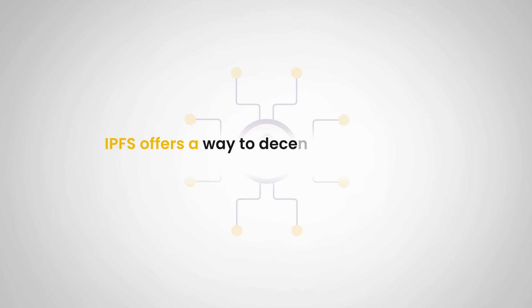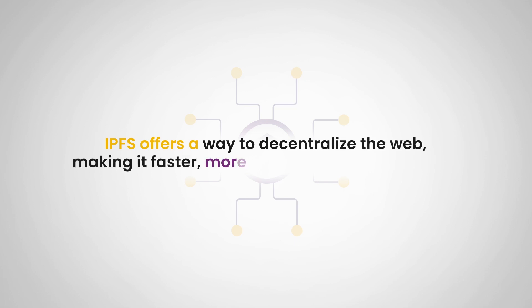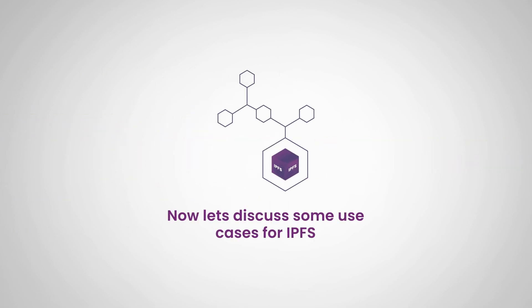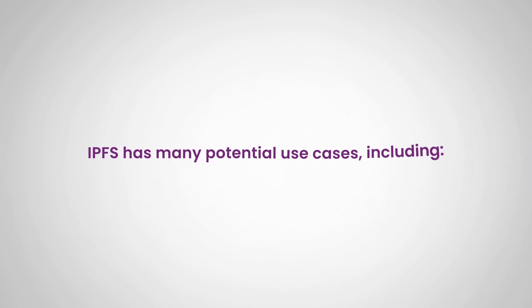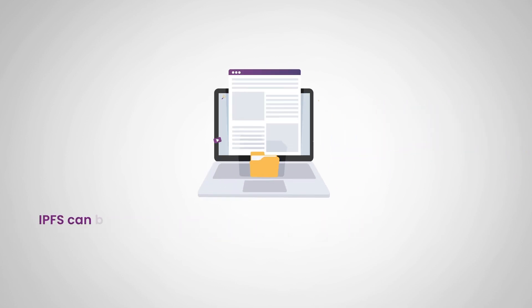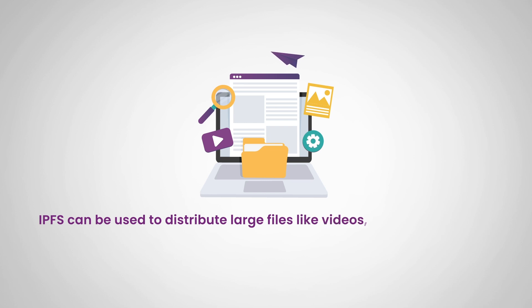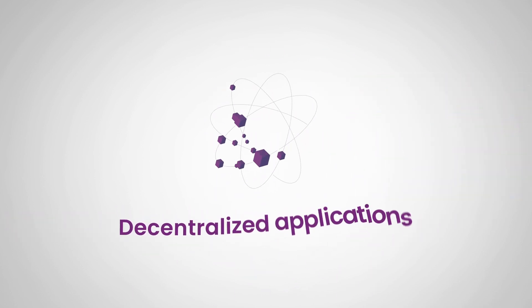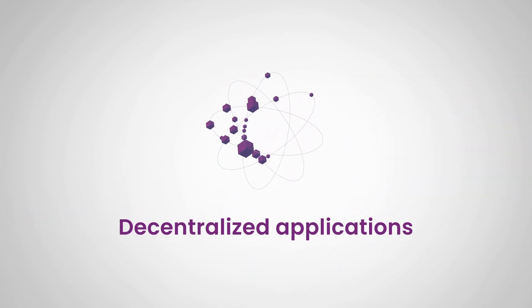IPFS offers a way to decentralize the web, making it faster, more resilient, and more secure. Now that we know what IPFS is, let's discuss some use cases. IPFS has many potential use cases. The first one is content distribution — IPFS can be used to distribute large files like videos, music, and images more efficiently and securely than traditional methods.